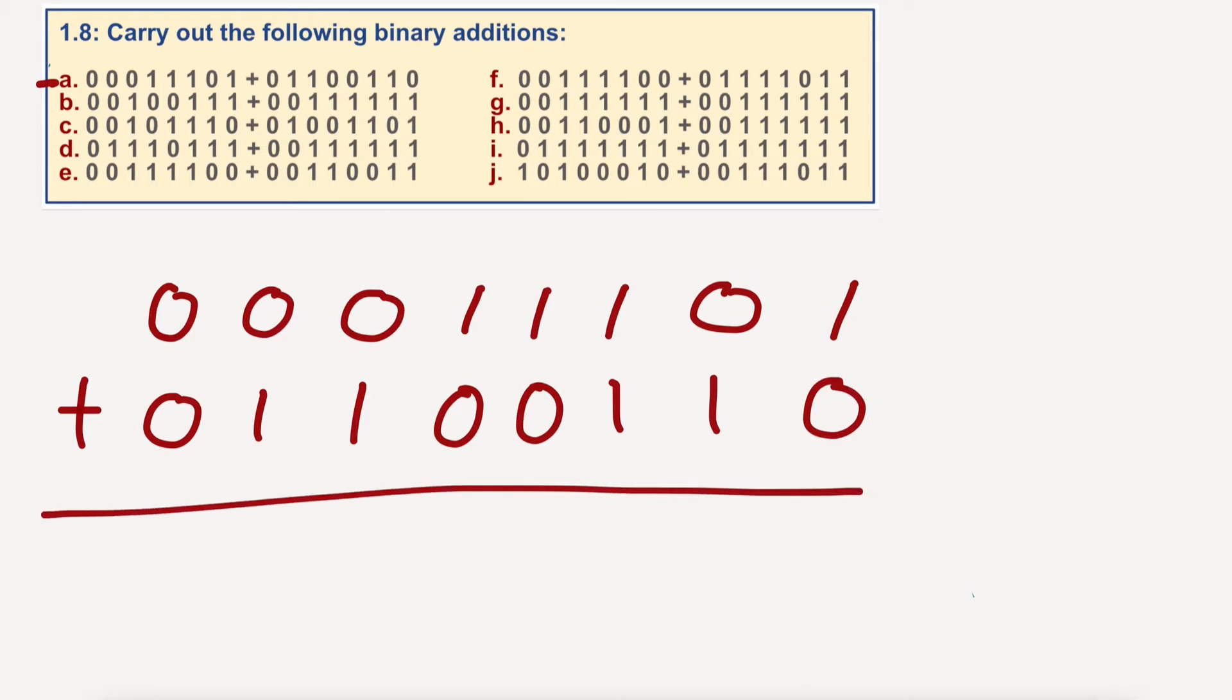Now, of course, with binary, we can only have zeros and ones. We can't have the number two or anything. We've only got these two characters. So, working along this sum, I go one plus zero is obviously one. One plus zero here is one. One plus one is two.